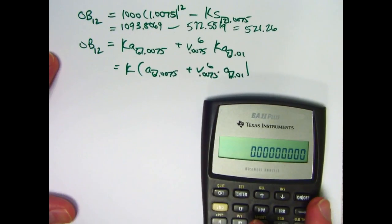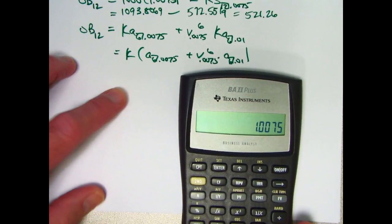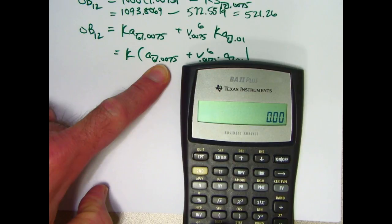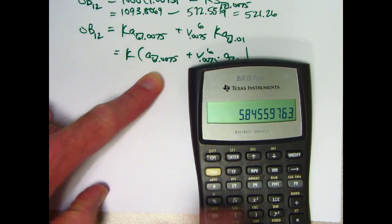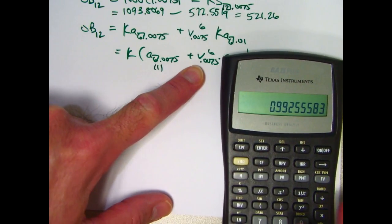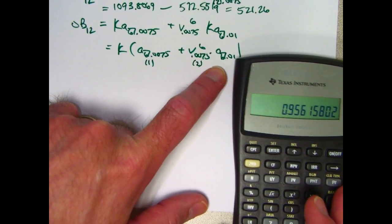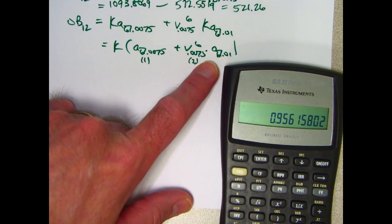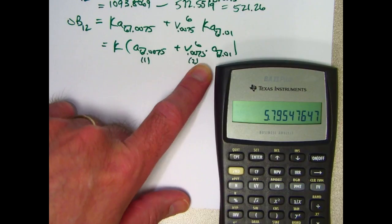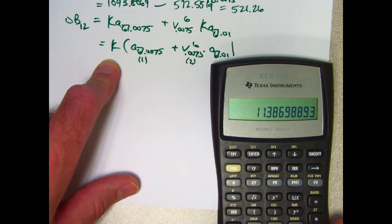Let's see if we get the same thing. Let's calculate this first: 1.0075, reciprocal, to the sixth power, subtract from one, divide by 0.0075. I'll store that in register one. This V is this to the sixth power. I'll store that in register two. Now do this a-angle: 1.01, reciprocal, sixth power, subtract from one, divide by 0.01, multiply by what's in register two, add what's in register one, and now multiply by K, which was in register zero.